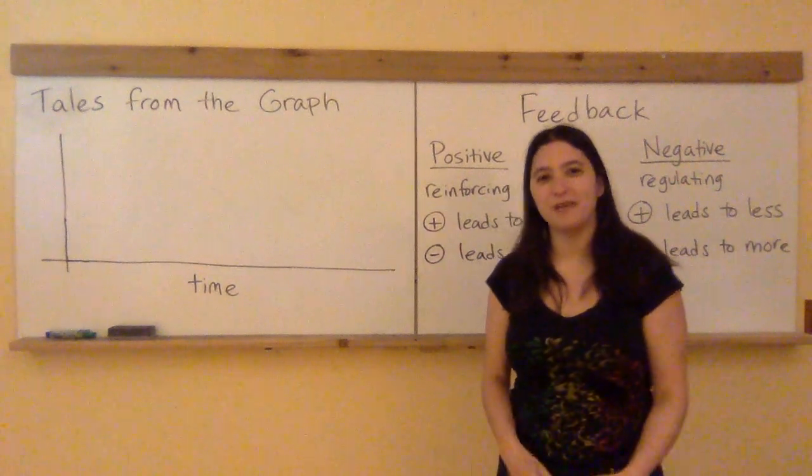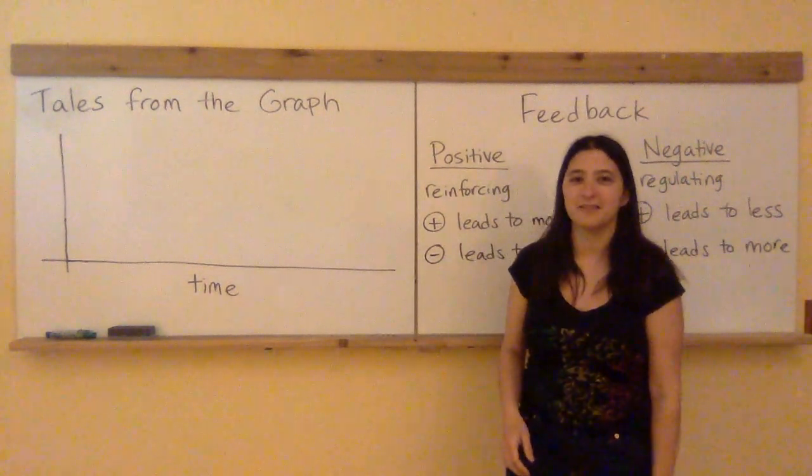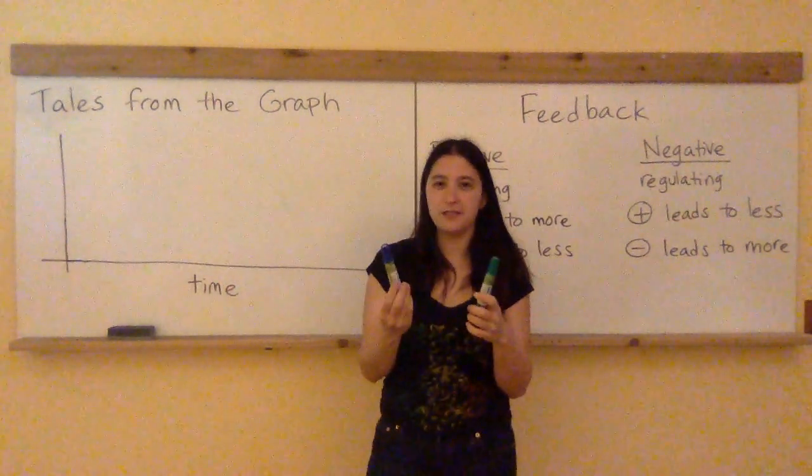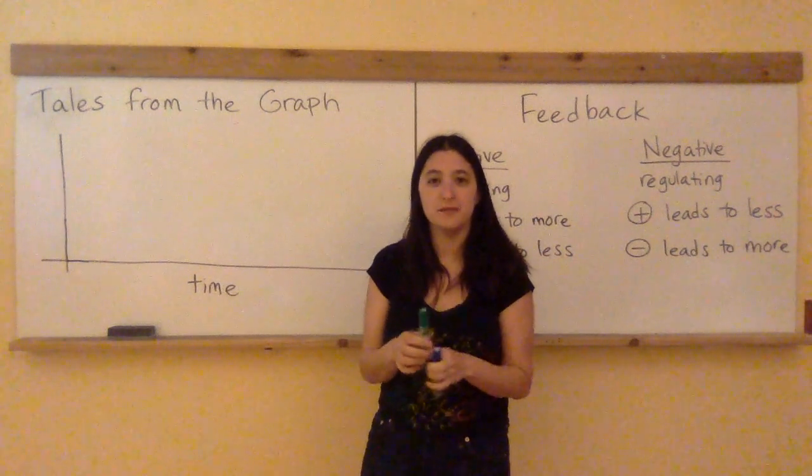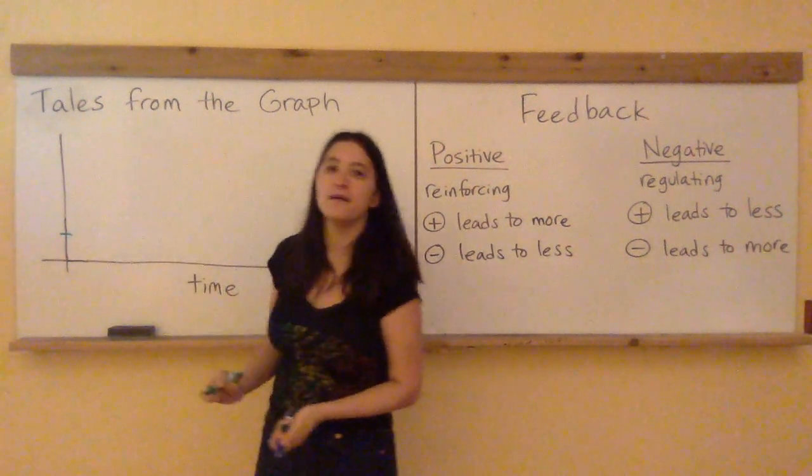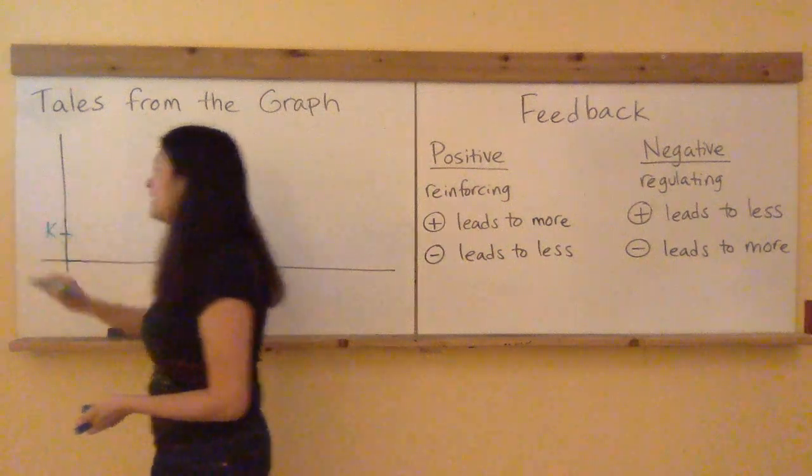Let's start to quantify this by writing it in a nice time series graph. That's why this is called Tales from the Graph. Alright I've got two pens here, a green one and a blue one. I suppose I'll use the green one for the kale. That seems fair. And so as our story goes we're starting with a bit of kale that we started growing in our garden here. I'll just mark that K for kale.